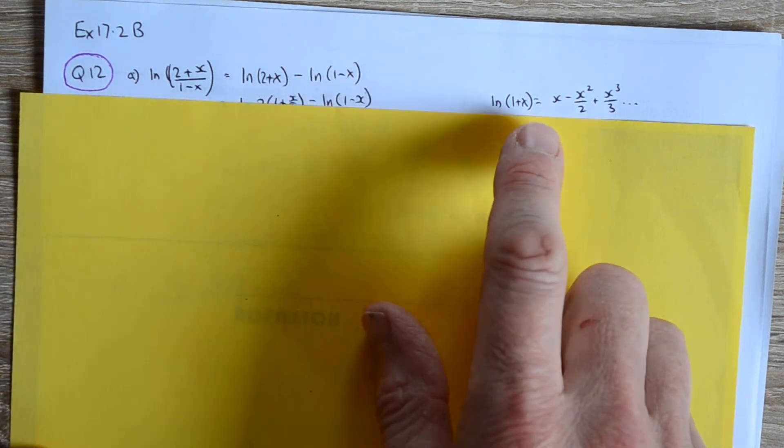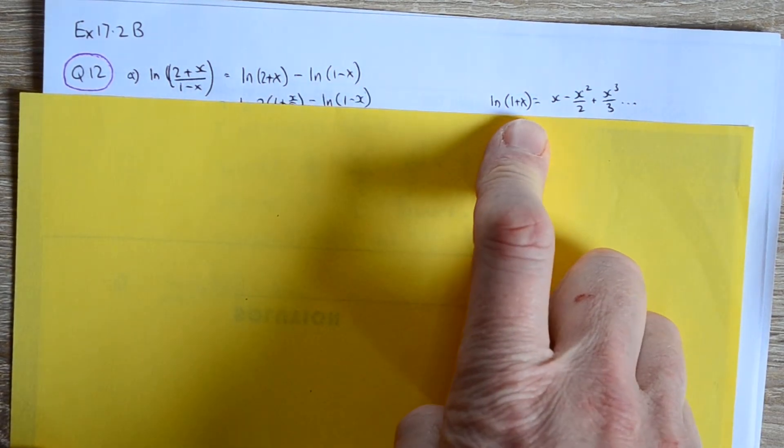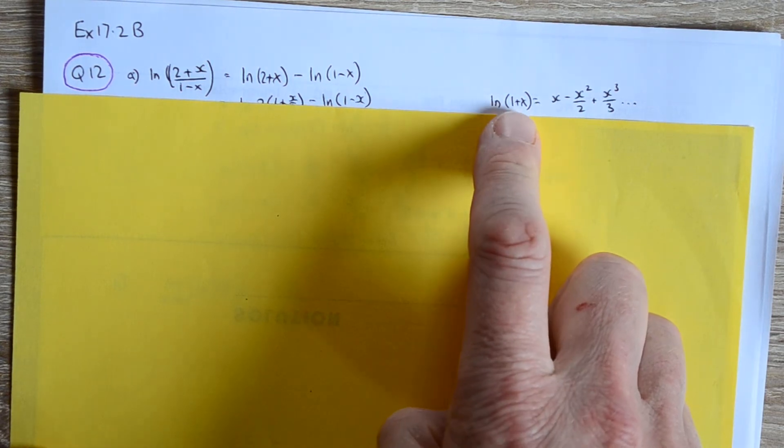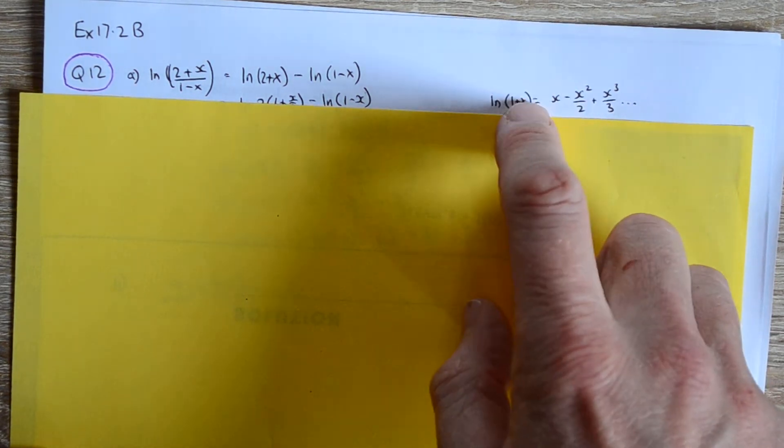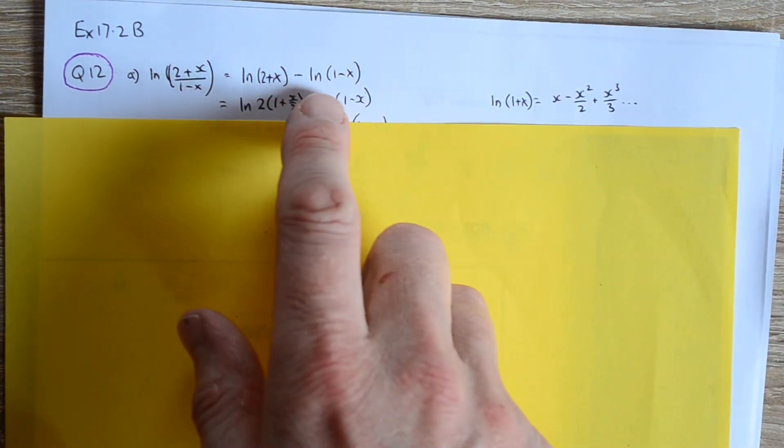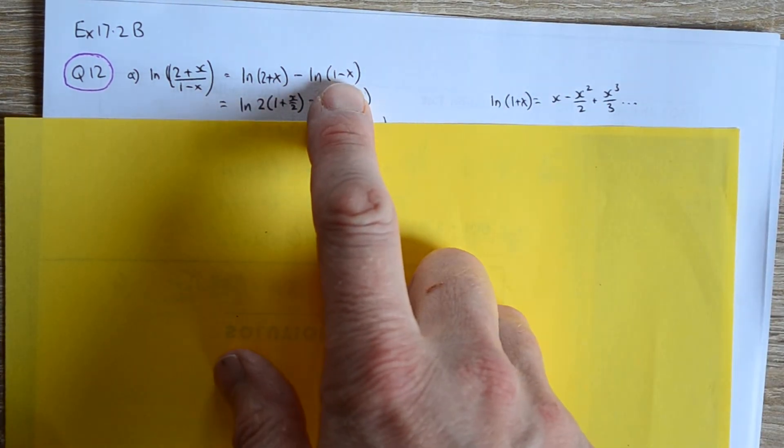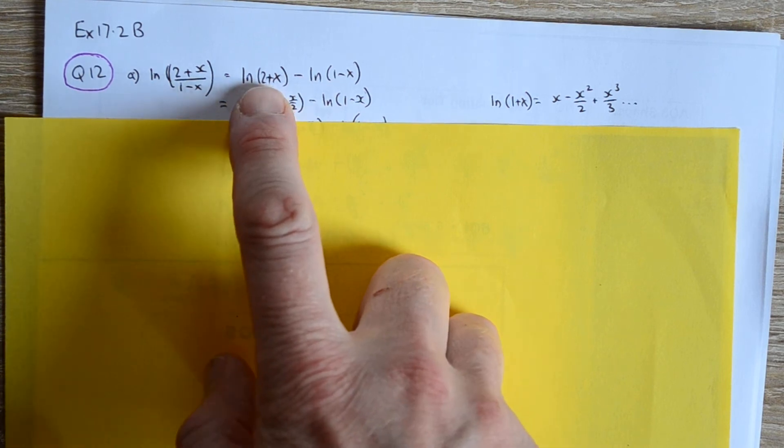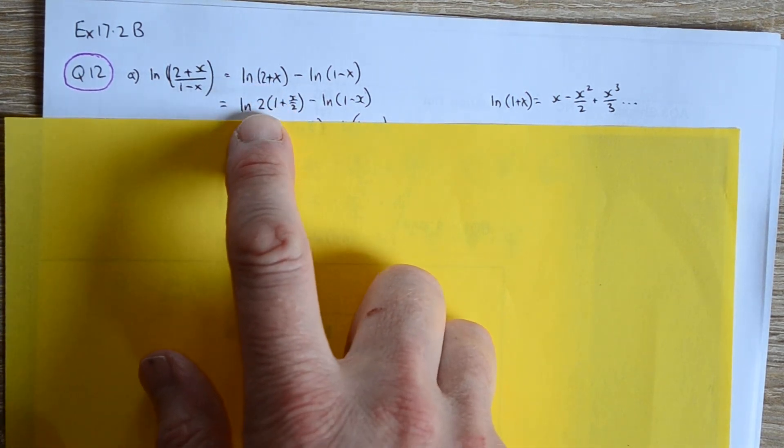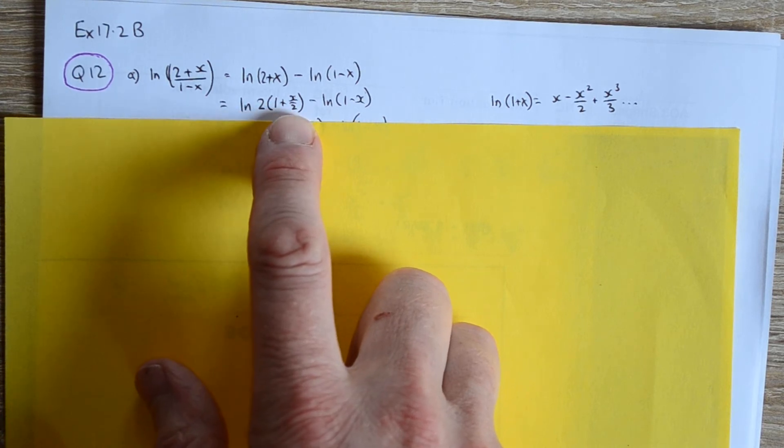Now, when you remind yourselves the standard expansion of ln(1+x), we want the 1 there. If it's a variation of x, we can sub that in. So what we've got - we can sub in minus x instead of x for the second one, but for the first one we've got the 2 there, so we're going to take a factor of 2 out, which leaves us with 1 plus x over 2 inside the bracket.